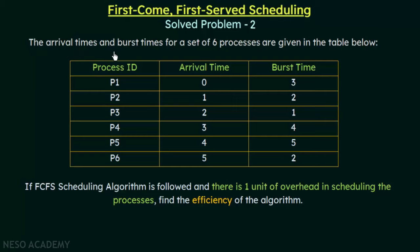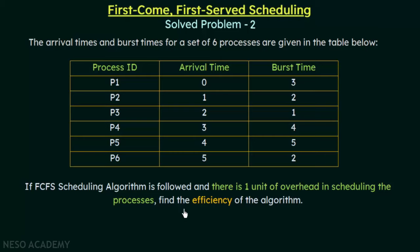The arrival times and burst times of a set of 6 processes are given in the table below. The processes are denoted with process IDs P1 to P6. If FCFS scheduling algorithm is followed and there is one unit of overhead in scheduling the processes, find the efficiency of the algorithm.